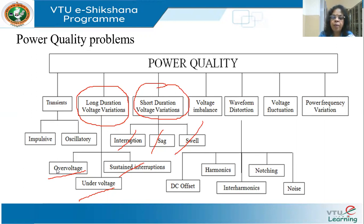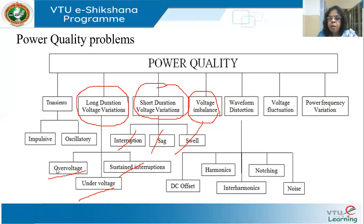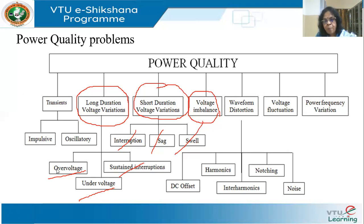Voltage imbalance: in a normal healthy grid, the three phase voltages are all balanced — equal in magnitude and displaced by 120 degrees — and the load should also be balanced. But faults like single line to ground or double line to ground can cause unbalance. Different phases may have different voltages. For a large balanced three-phase induction motor, say a 5,000 HP motor, an unbalanced voltage will cause vibrations and torque oscillations. Therefore, voltage unbalance is also a power quality issue.